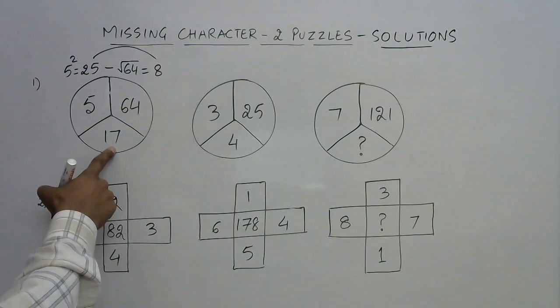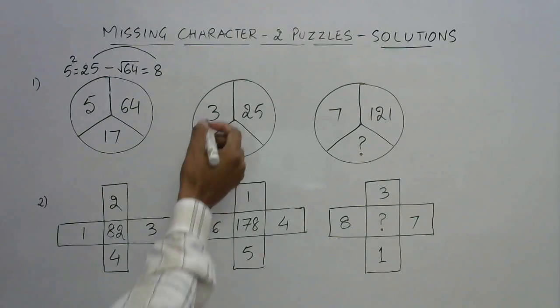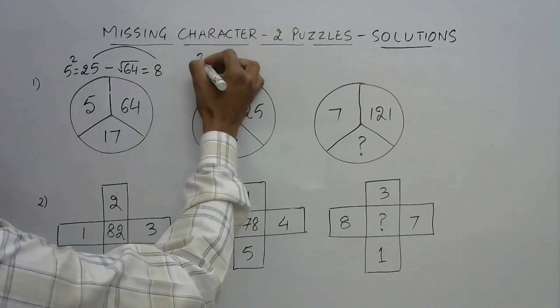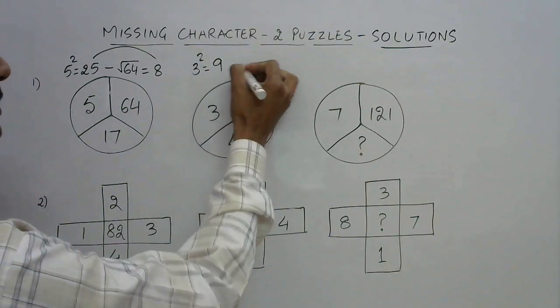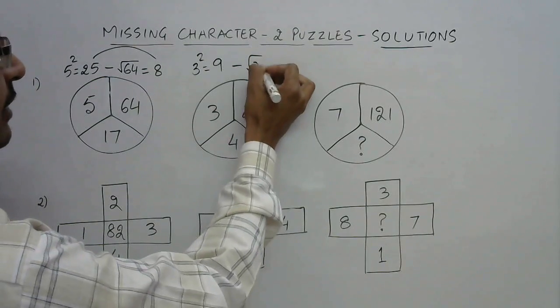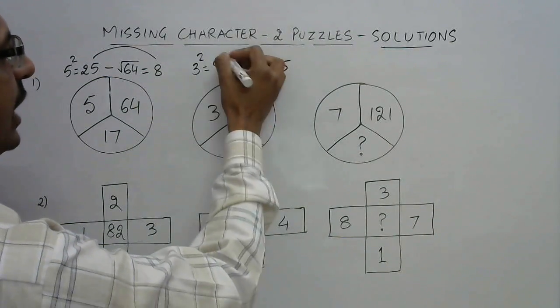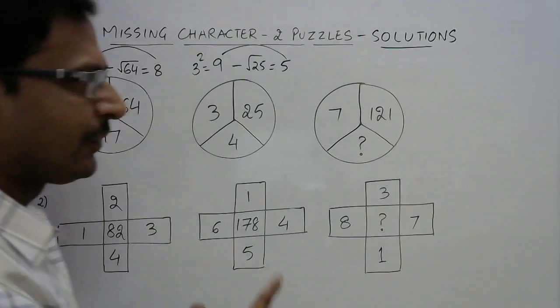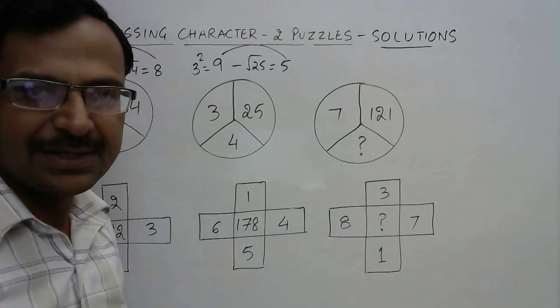Like this here, if you take the square of 3 it is 9, and subtract the square root of 25 which is 5, so 9 minus 5 gives you 4.